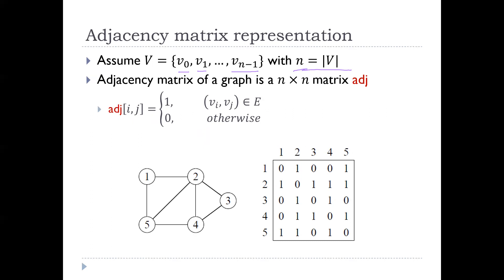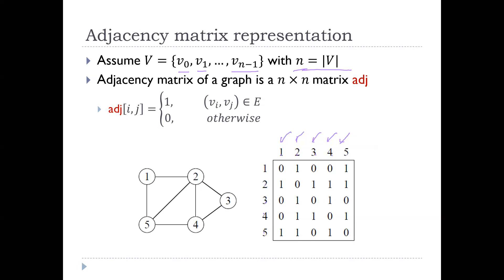The adjacency matrix has n columns and n rows, and each column corresponds to one node. So if you have graph nodes 1, 2, 3, 4, 5 — both rows and columns correspond to those nodes. Whenever you have an edge between vi and vj, you put an entry of 1 there. For example, I have an edge between 1 and 2, so I go to entry (1,2) and put 1 there.